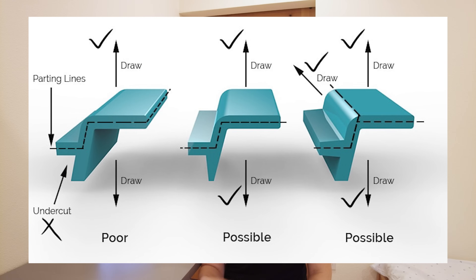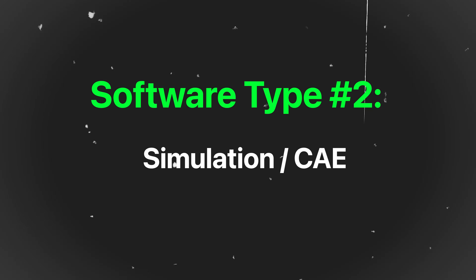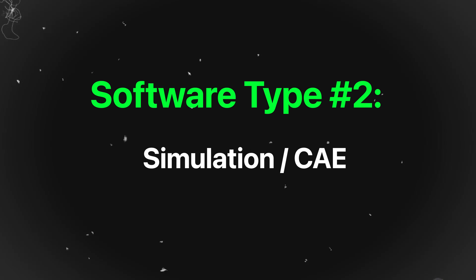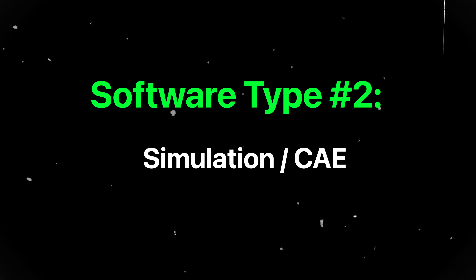Developing a mindset for designing parts that are robust, ergonomic, manufacturable, cost-effective, and can be assembled easily matters way more to employers than which software you actually learn. Good hiring managers know this, so they won't filter you out just because you're good at SolidWorks and unfamiliar with CATIA. And if they do, you probably don't want to work for them in the first place. Next is numerical simulation or CAE — computer-aided engineering software — which you will 90% be using at some point in your career.